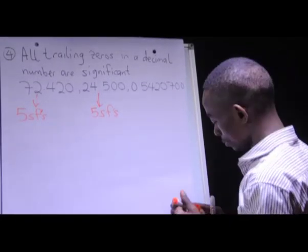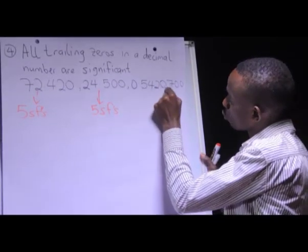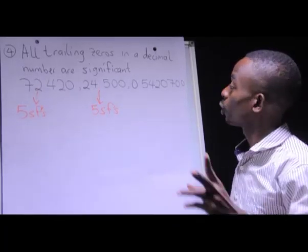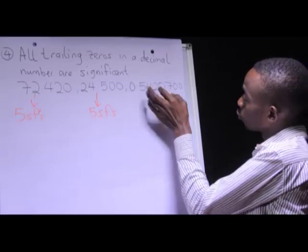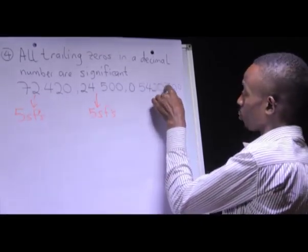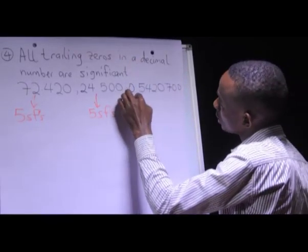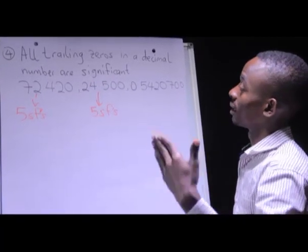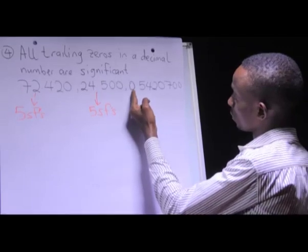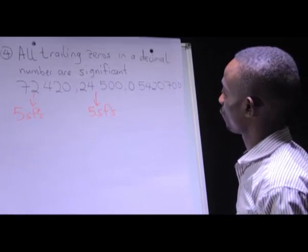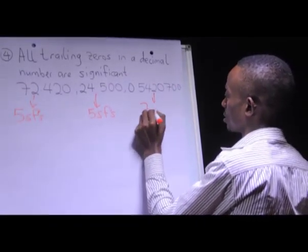For 0.54270: the digits 5, 4, 4, 2, and 7 are significant based on condition one. The zero between non-zero digits is significant by condition two — zeros between any two non-zero digits are significant. The last two trailing zeros are also significant by condition four. The leading zero at the start is not significant, as condition three says all leading zeros are not significant. Counting the significant figures: 1, 2, 3, 4, 5, 6, 7 — so there are 7 significant figures.